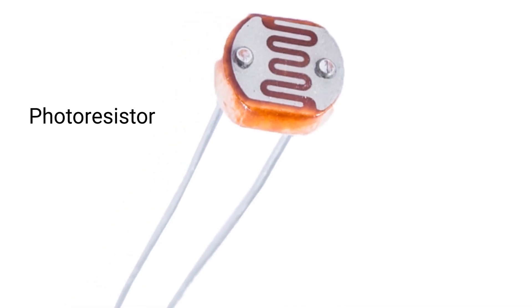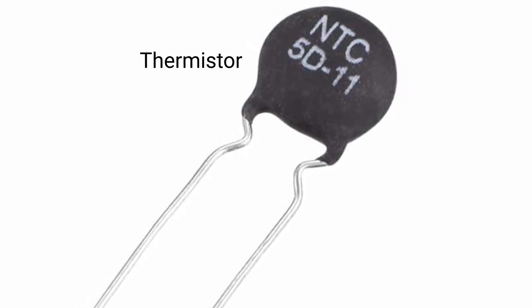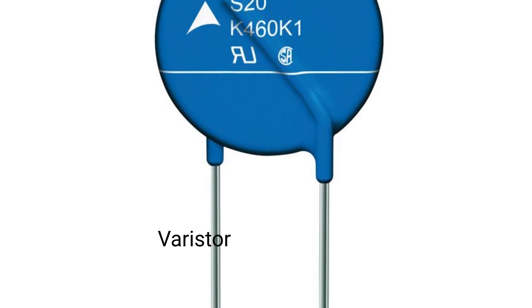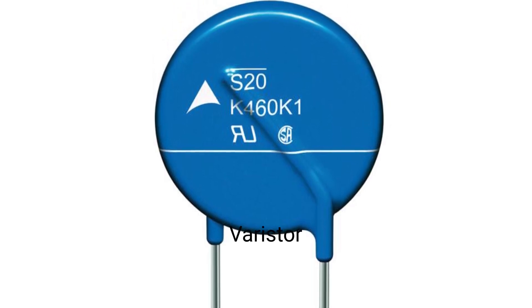Photoresistors that change the resistance based on light exposure. Thermistors that change the resistance based on temperature. They are primarily used in circuit protection. And finally, varistors that change the resistance based on applied voltage, usually used to prevent surges.